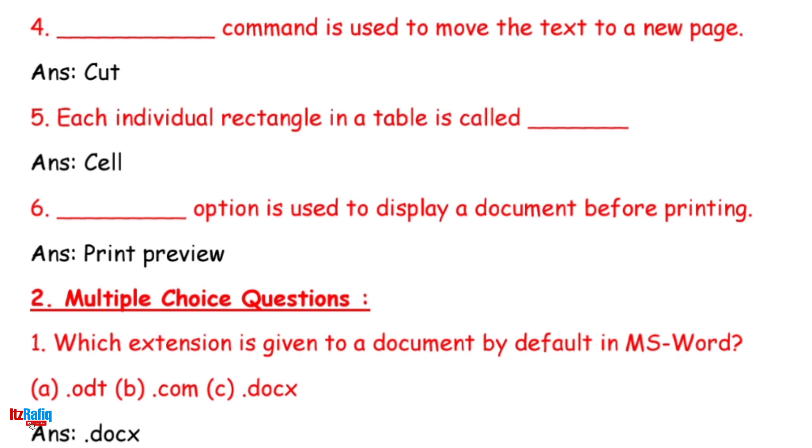5. Each individual rectangle in a table is called blank. Answer: Cell. 6. Blank option is used to display a document before printing. Answer: Print Preview.